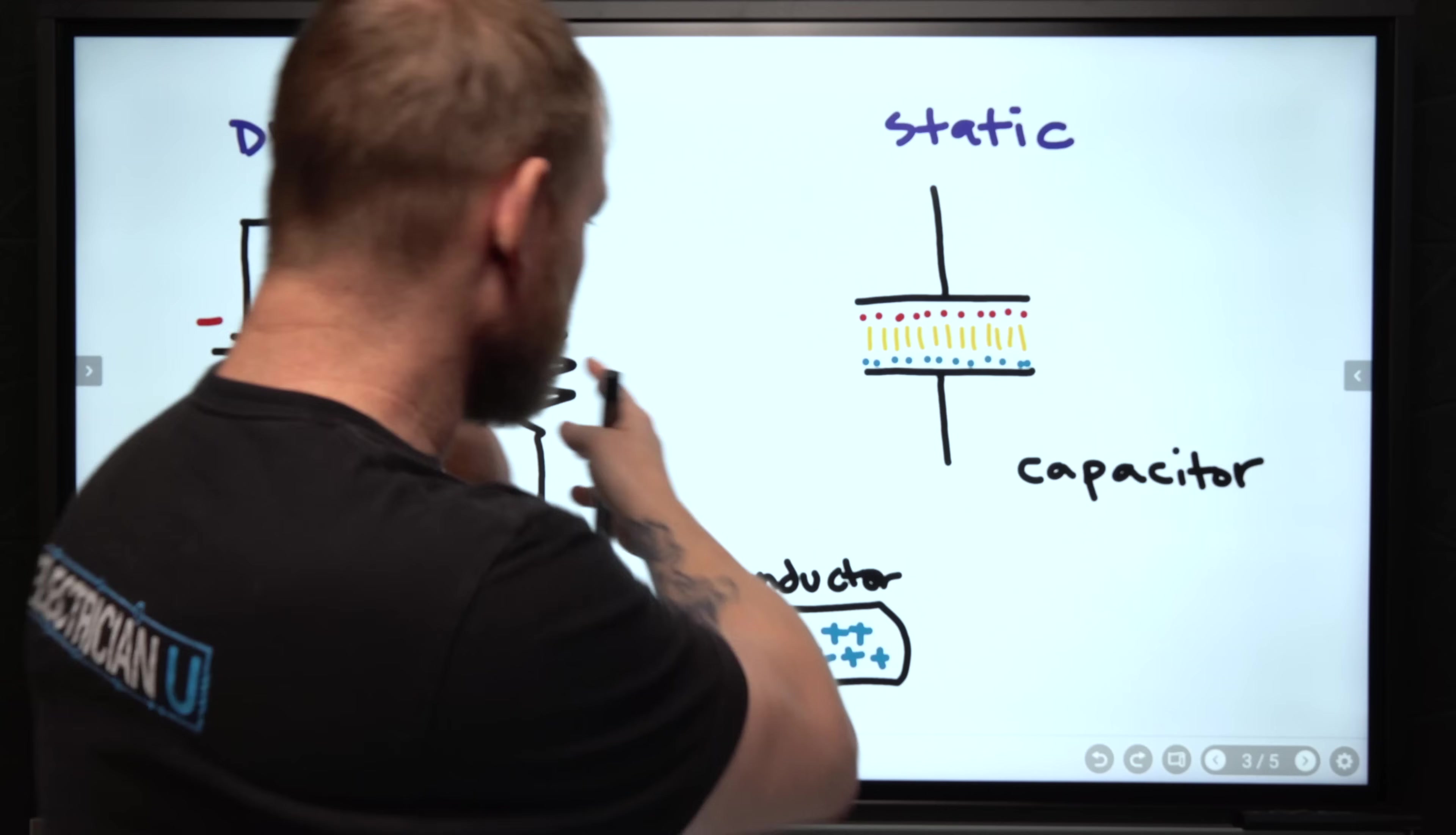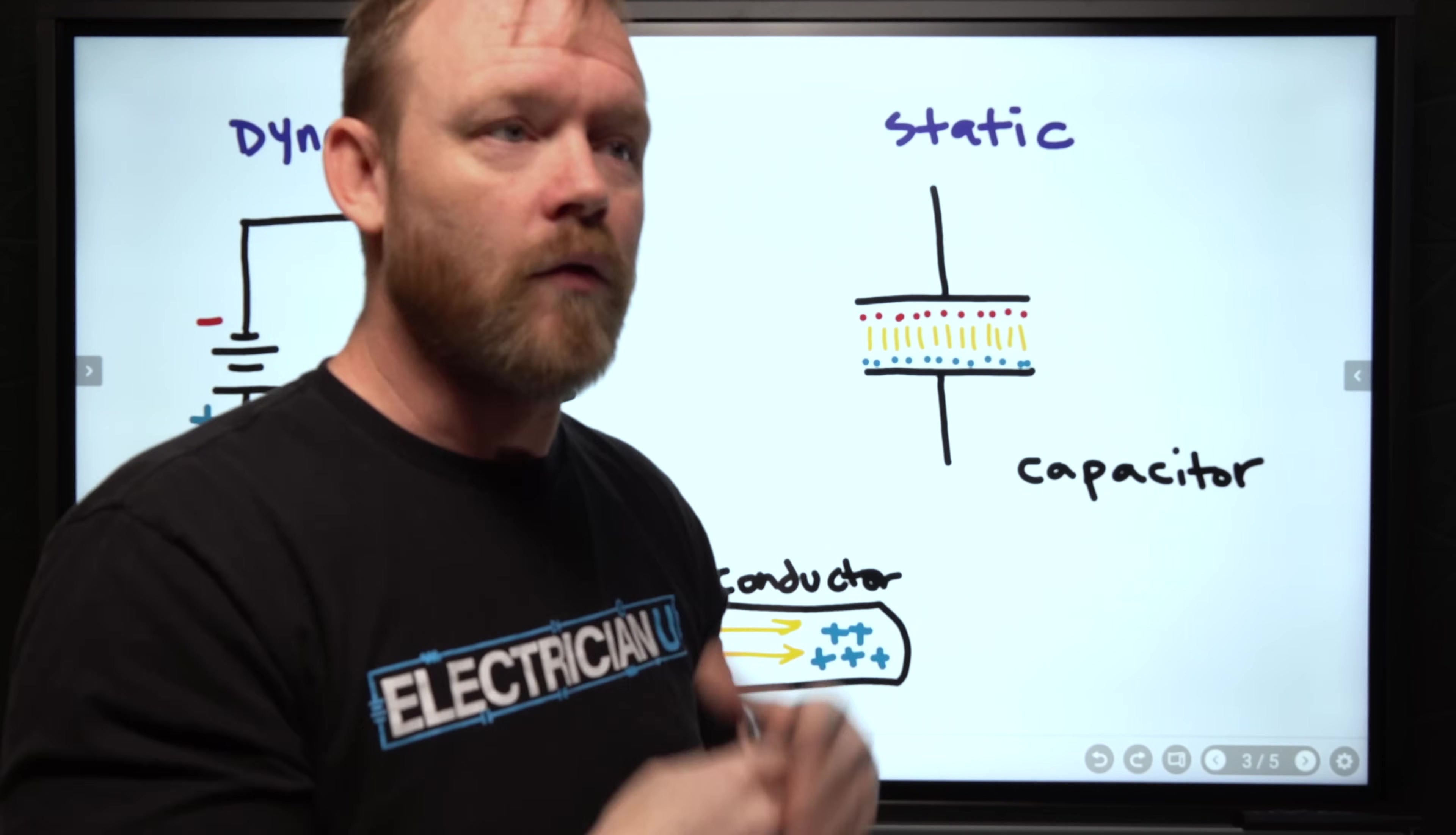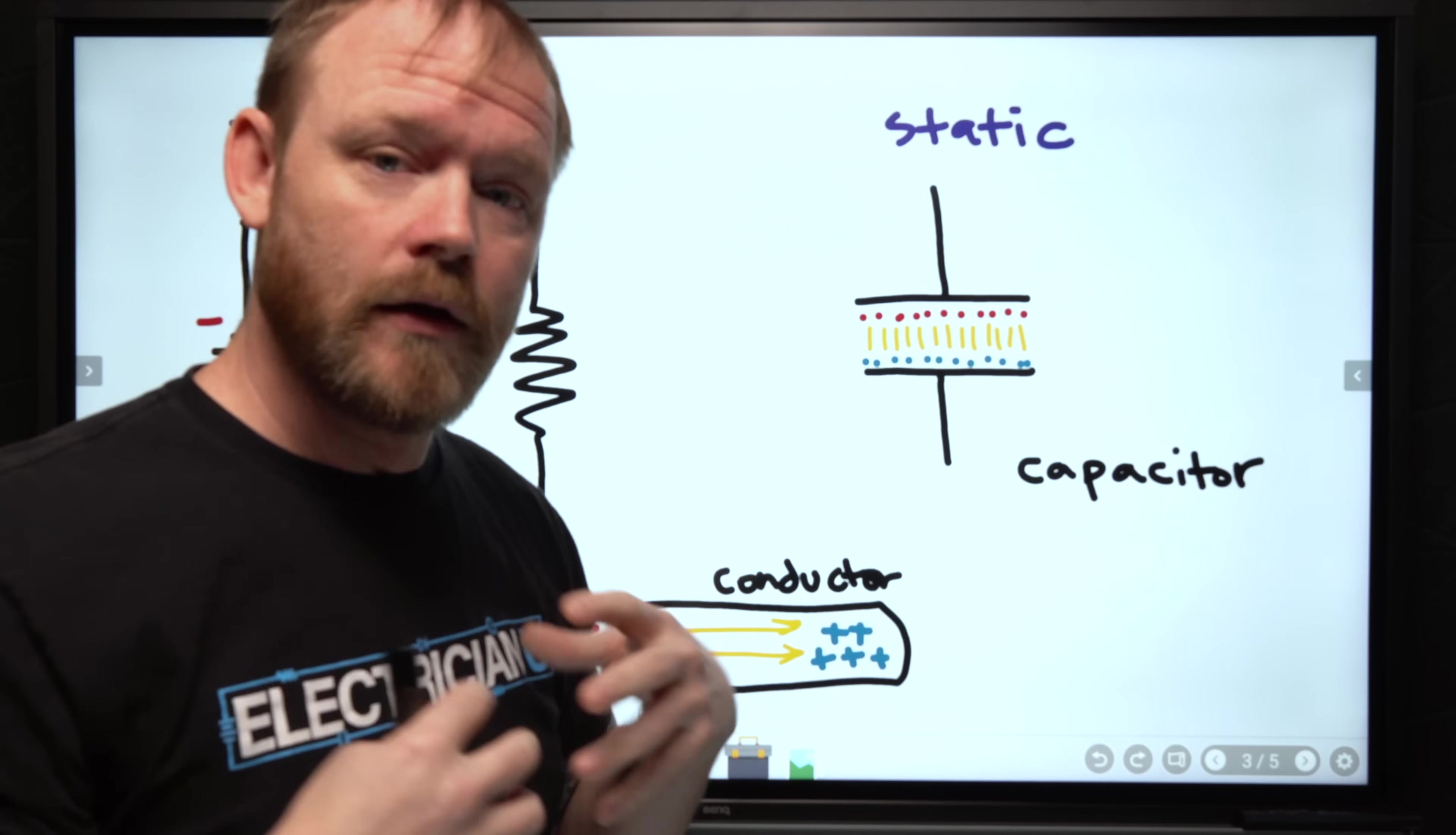So when we're dealing with a circuit we're dealing with electrodynamics, right? We have current that's flowing consistently through a circuit, but we still do have a buildup of charge. We have what's called a difference of potential, and that's usually what we call voltage. Difference of potential inside of a battery means that we have a side of this battery that is a little bit more giving of electrons and one side that's more receiving of electrons.